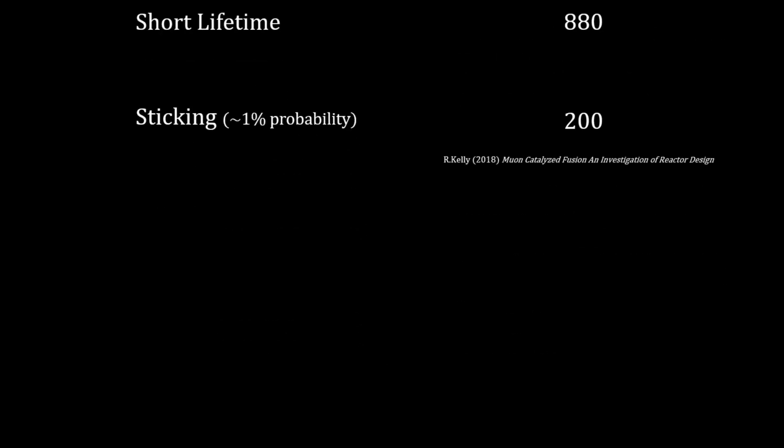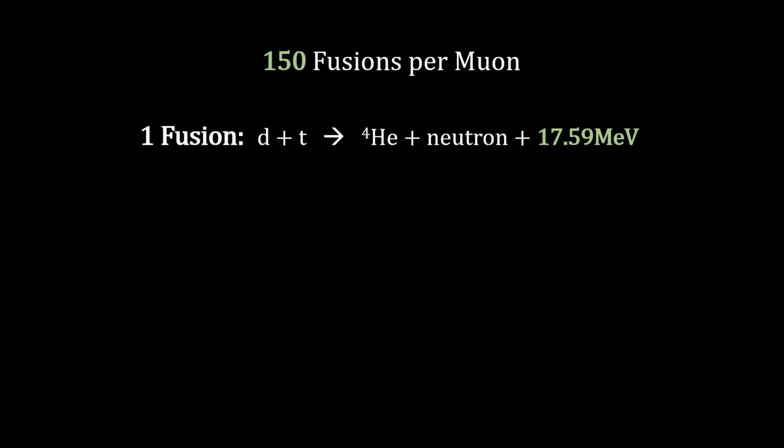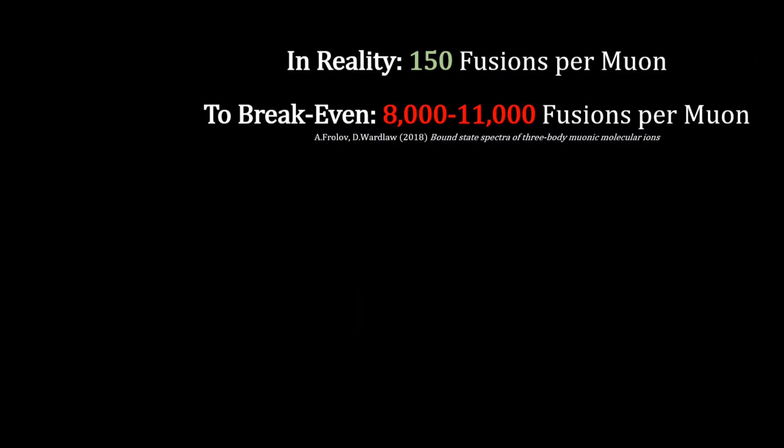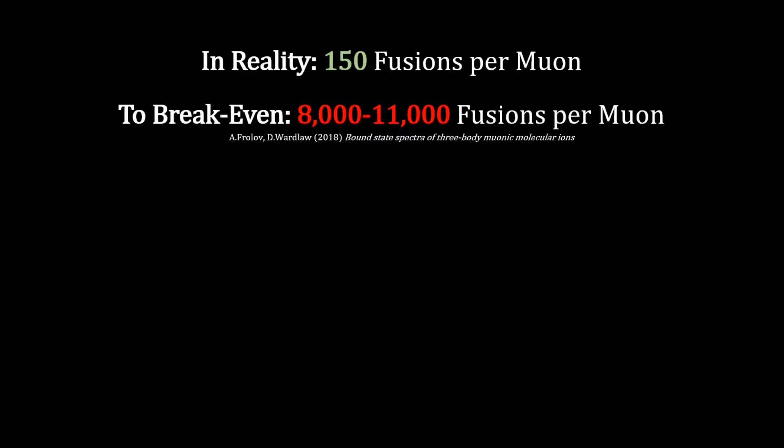This in turn gives 2.7 gigaelectron volts of energy generated per muon catalyst. Whilst numbers vary, it takes around 5 to 10 gigaelectron volts to produce a muon, hence reaching breakeven, let alone an energy gain for commercial power production is tricky.